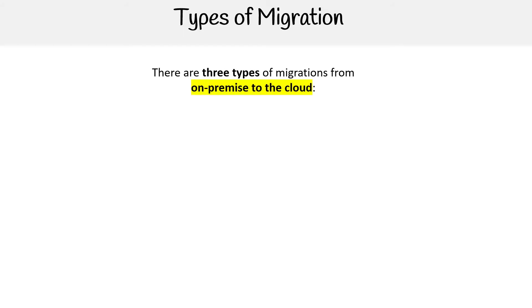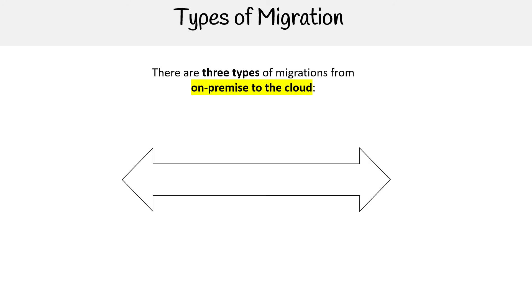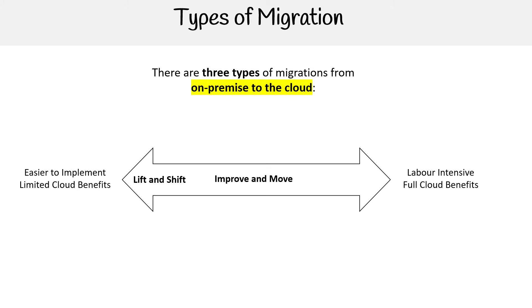Hey, this is Andrew Brown from ExamPro. We are looking at the types of migration for Google Cloud, and they define three. This is a migration from on-premise to the cloud. We have a spectrum here — the easiest is on the left, the hardest is on the right. So we have lift and shift, improve and move, and rip and replace.